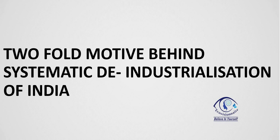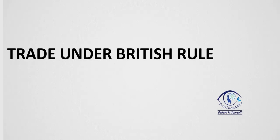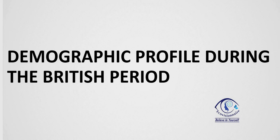Another important question is the twofold motive behind systematic deindustrialization of India — making India a market for finished goods and an exporter of cheap raw materials. The third topic is trade under British rule, which includes the drain of wealth. You need to prepare British monopoly in trade as well. A lot of short-answer questions come from this topic.